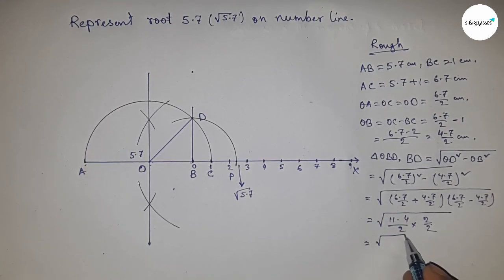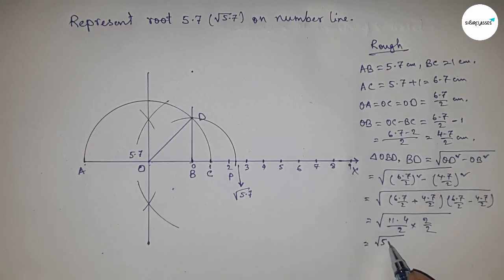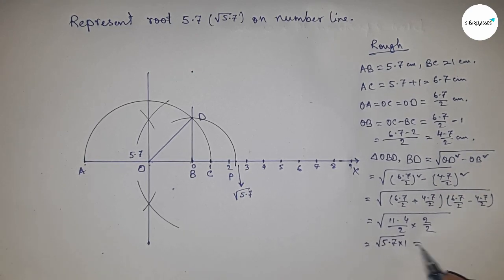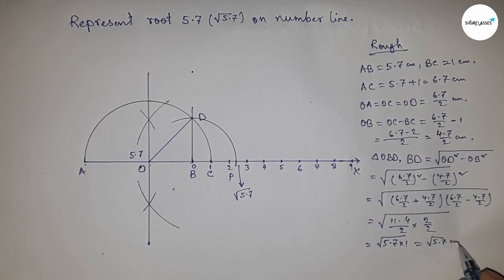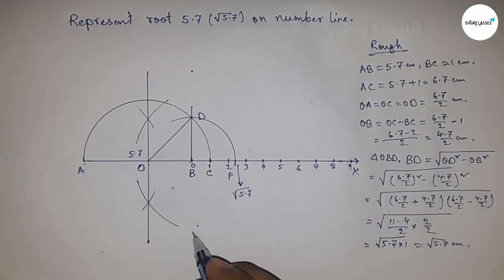So this is 5.7 times 1, which equals root 5.7 centimeters.